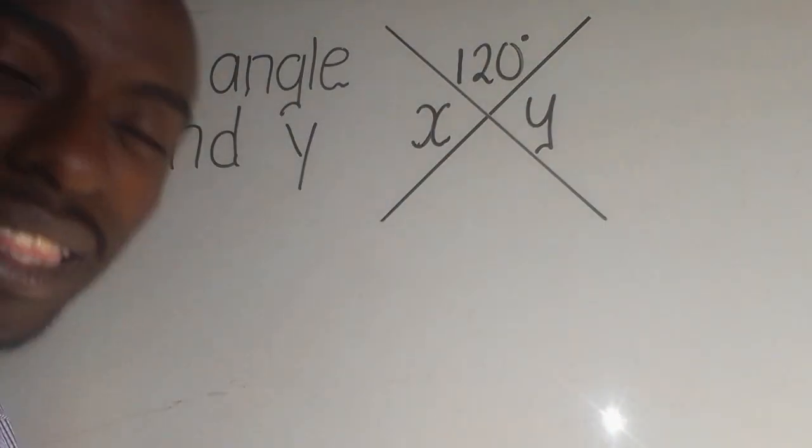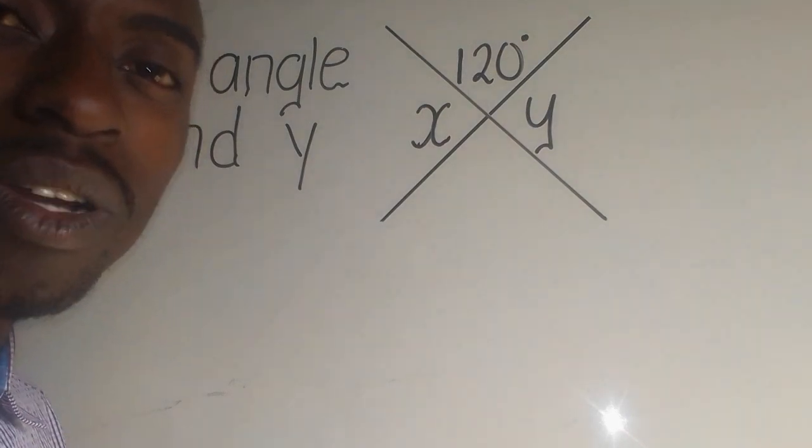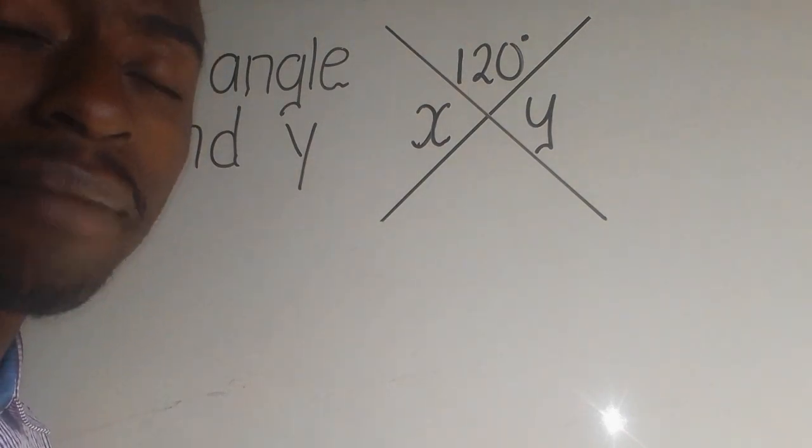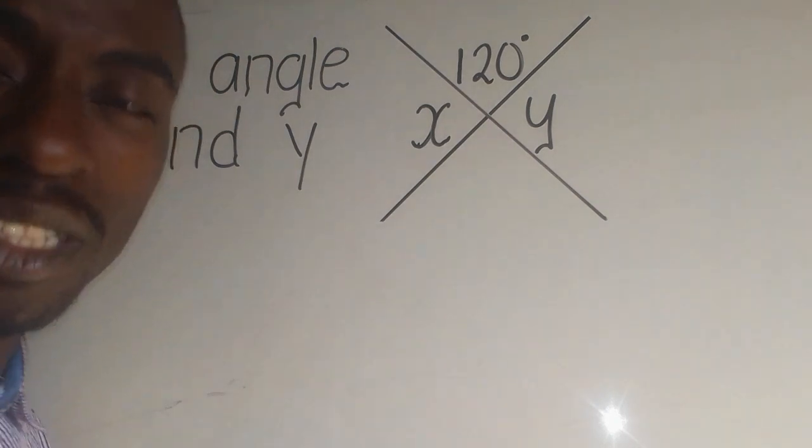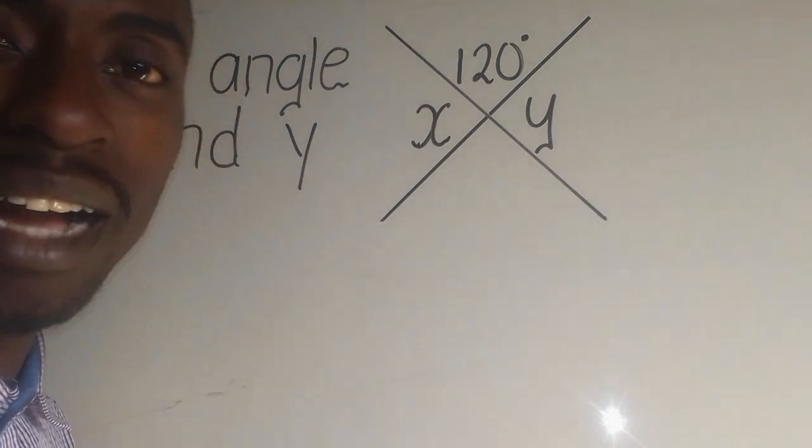You need to understand that when they say an angle, an angle is the amount of turning. Now, angles are different based on how they are formed.